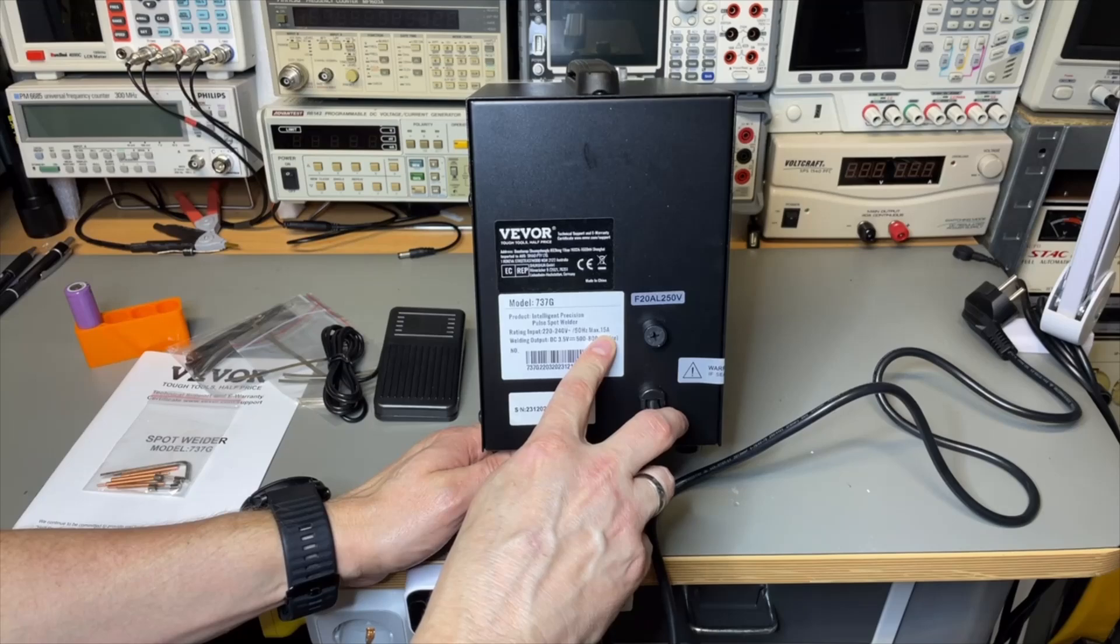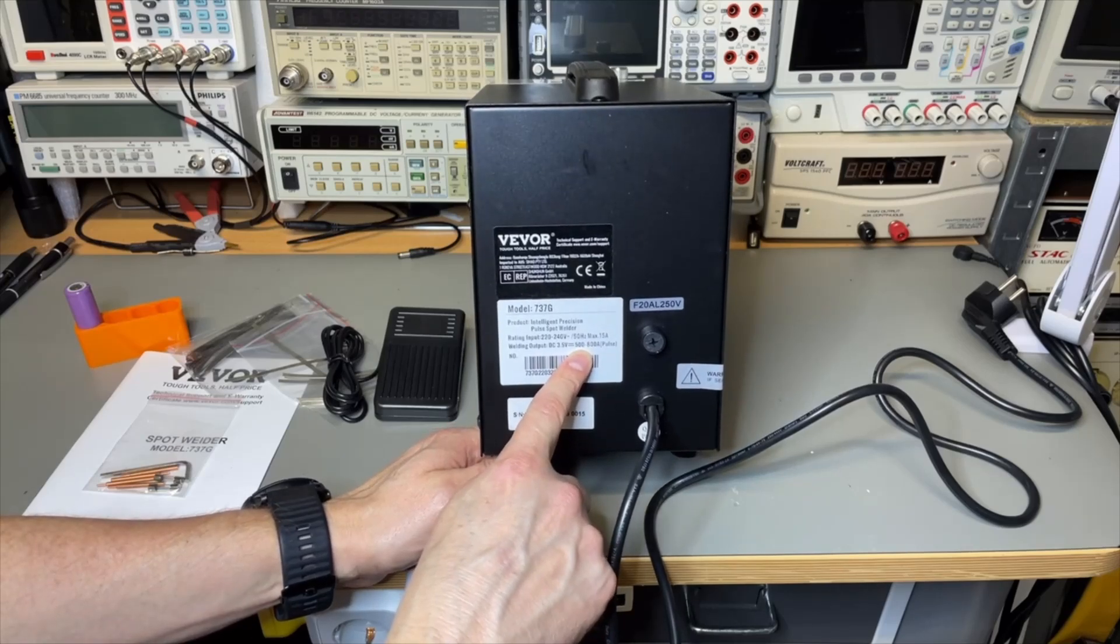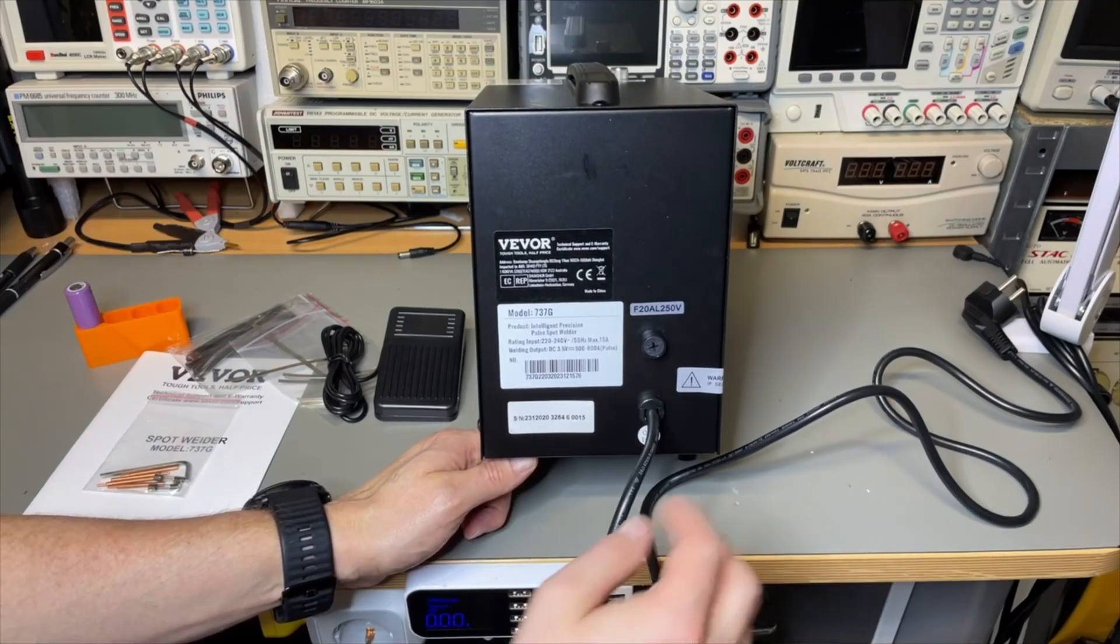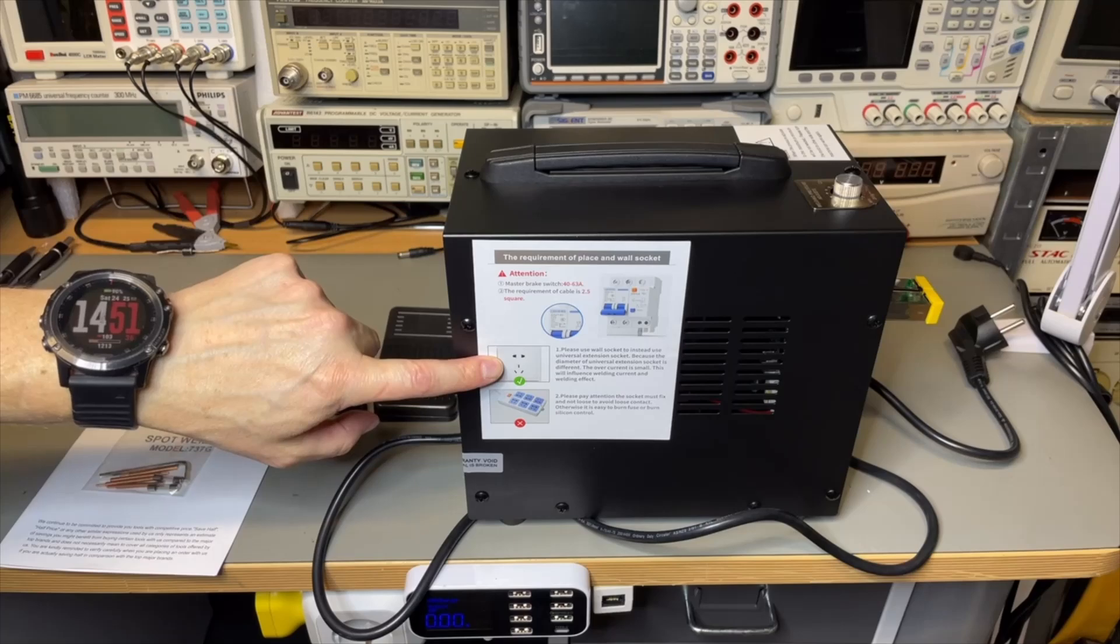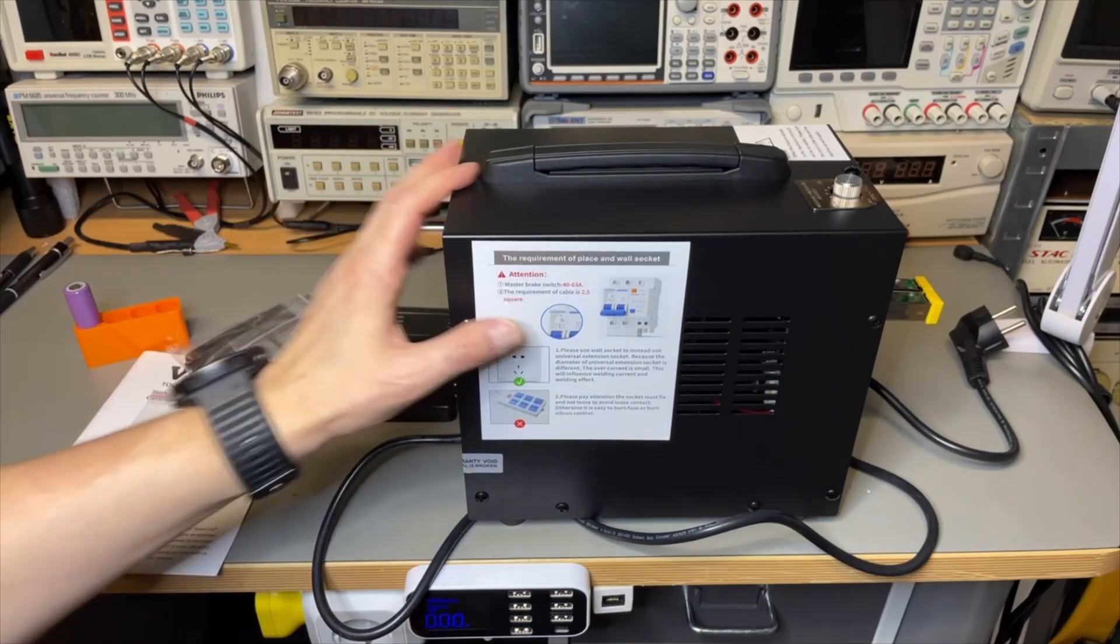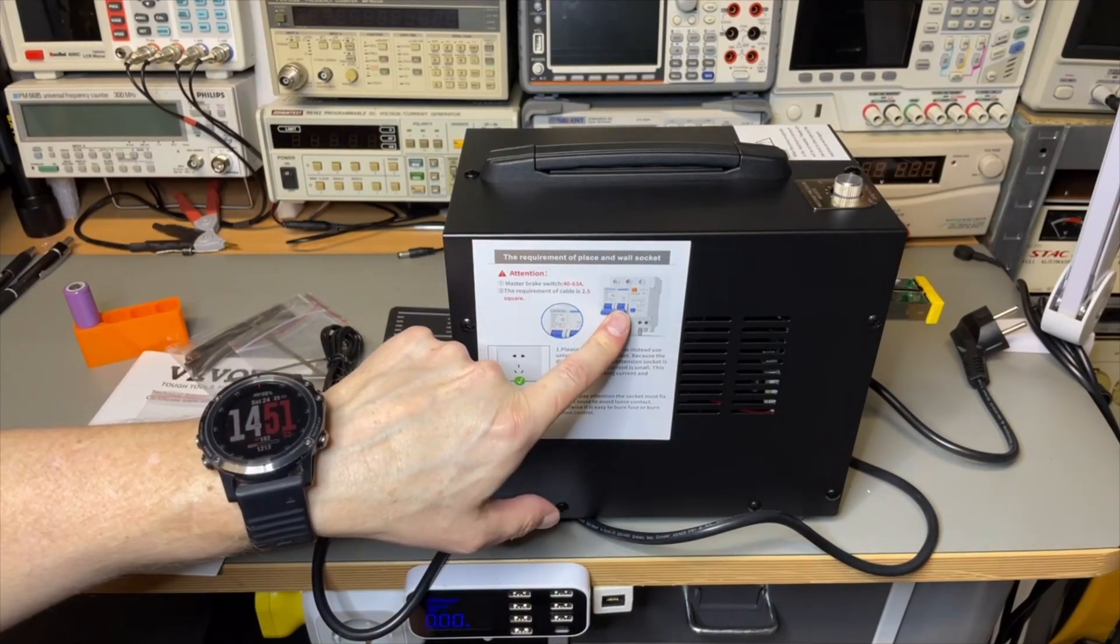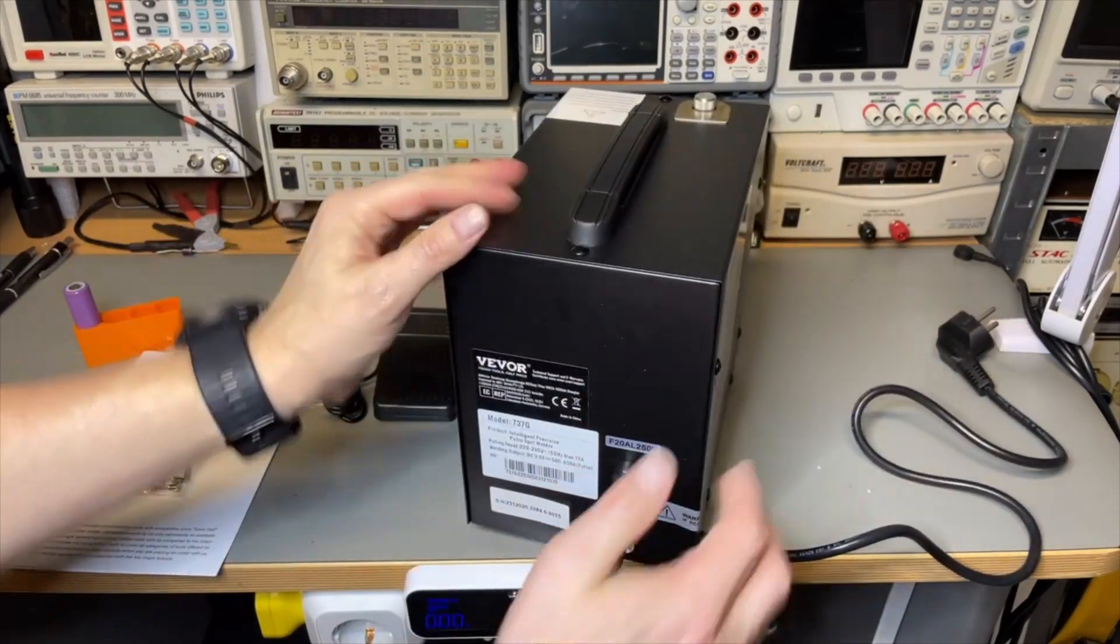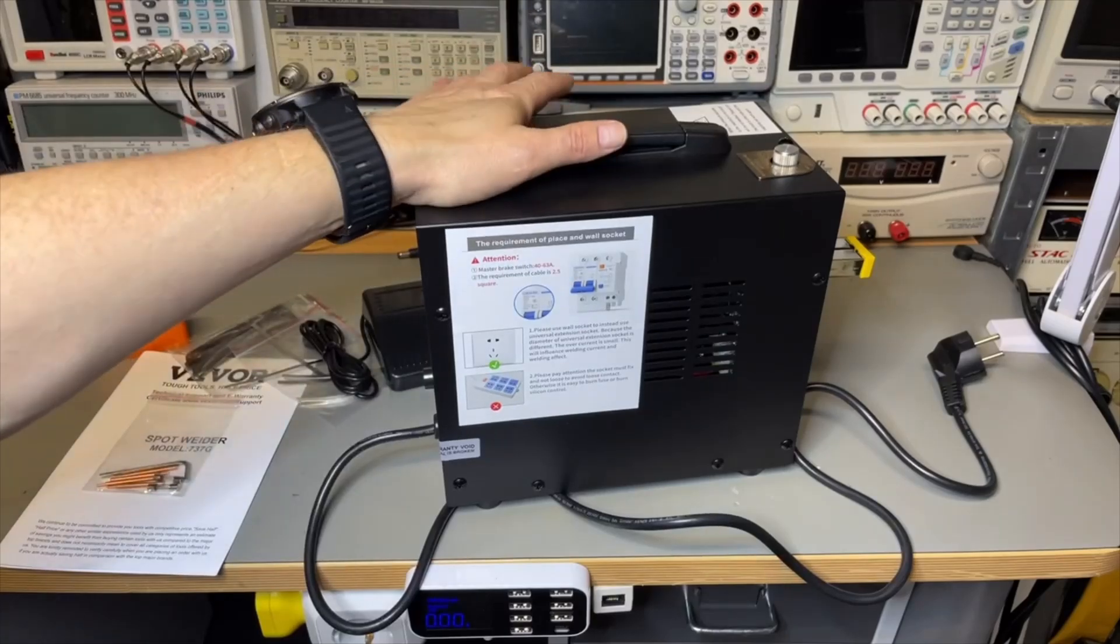They say it's maximum 15 amps, so that will work on my electricity group. I read in the manual you can change it in percents from 80 to 800 amps. They say be sure to put it directly in your wall socket. Do not use an extension cord because they want you to have a 2.5 square electricity cable. They even say your master breakers should be 40 or 60 amp. I have 40, and my group is only 16, but I need 15 and have a C-characteristic, so that should work. I'll try to put it as close as possible to my wall socket.